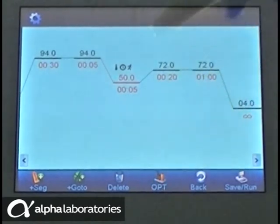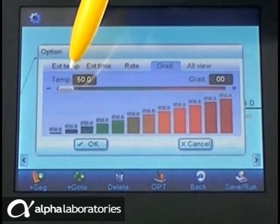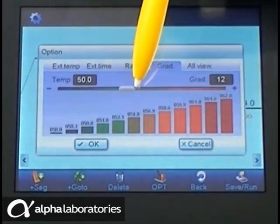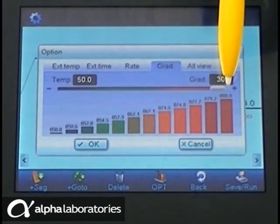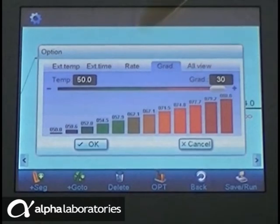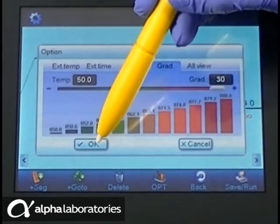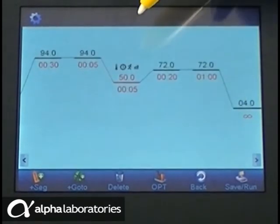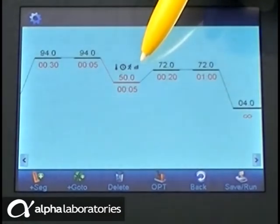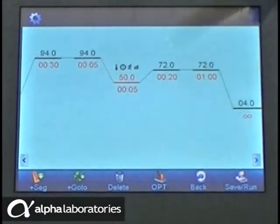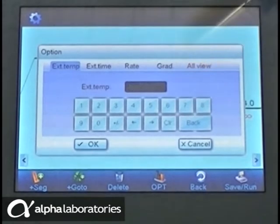A gradient is a useful tool for the optimization of your reaction. Use the sliding scale to define the spread of annealing temperature across each corresponding column of wells with a maximum variation of 30 Celsius. When a gradient is applied, this is indicated by the graphical symbol. The All view presents a summary of the options applied.